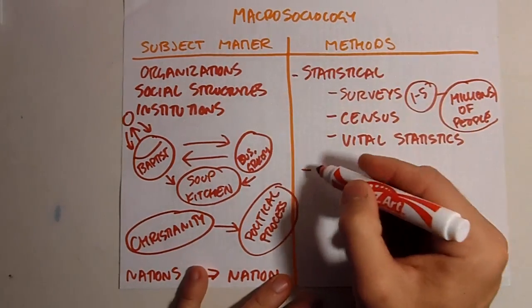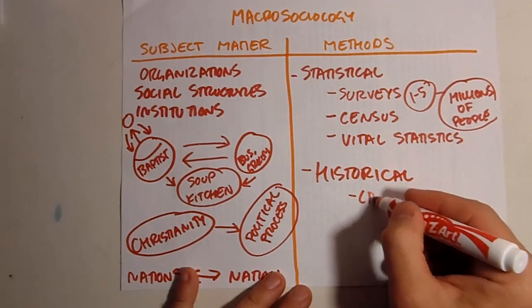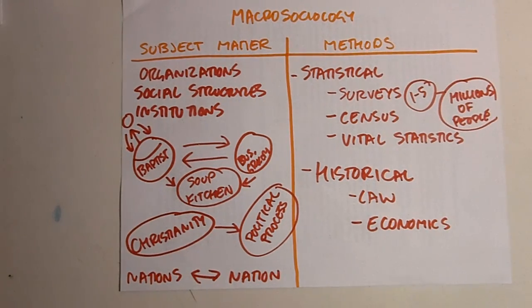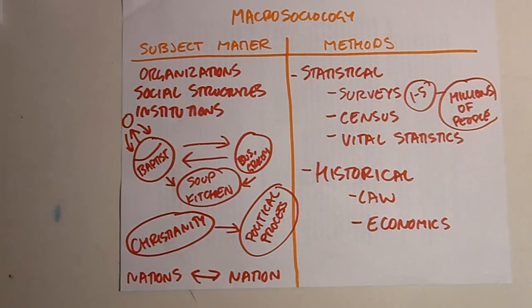Other methods important to macro-sociological approaches include historical studies. Macro-sociologists might look at laws or changes in economic conditions that have influenced society over time. A good example involving laws is race in the United States. From the Constitution and slavery to the Emancipation Proclamation, Jim Crow segregation, and now affirmative action, laws have helped create race and our understanding of it. Social structures, institutions, and organizations have been built up around ideas of race associated with laws made sometimes hundreds of years ago. Changes in economic conditions are also influential in understanding changes in the behavior of social institutions.